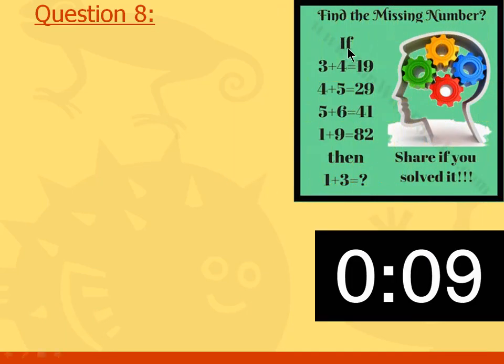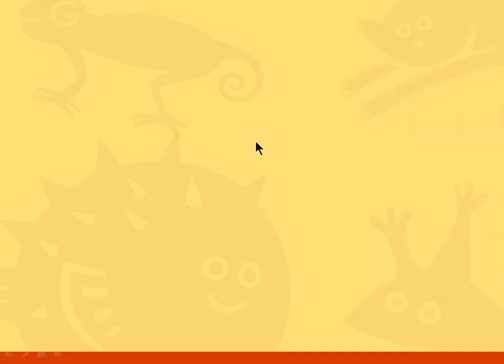Question number eight: find the missing number. If 3 plus 4 is 19, 4 plus 5 is 29, 5 plus 6 is 41, 1 plus 9 is 82, then what is 1 plus 3? The answer is 10.